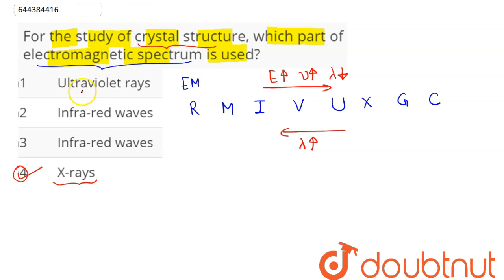We can use ultraviolet rays, but to study crystal structure we use X-ray. And we can see here the wavelength and frequency of these X-rays is given here as,